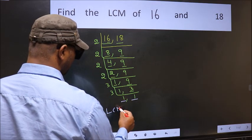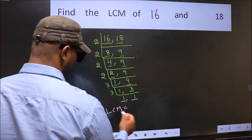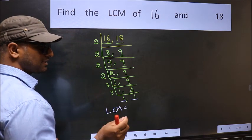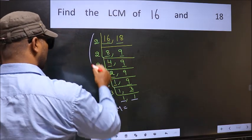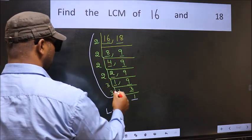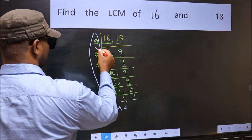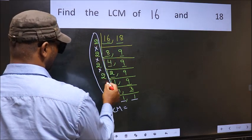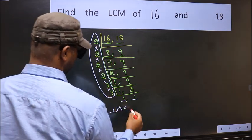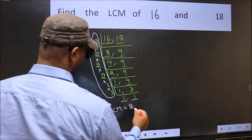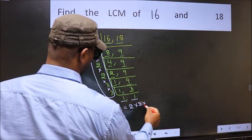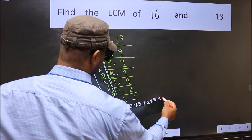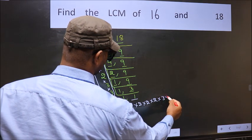So our LCM is the product of these numbers, that is 2 into 2, into 2, into 2, into 3, into 3.